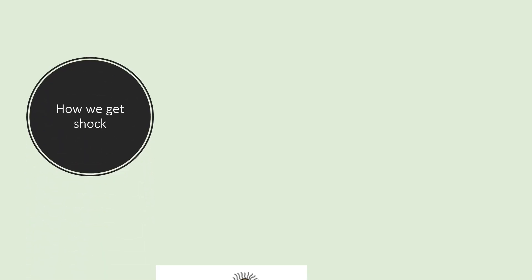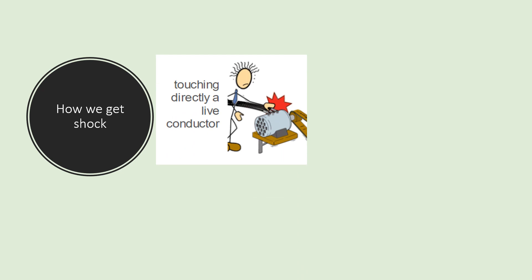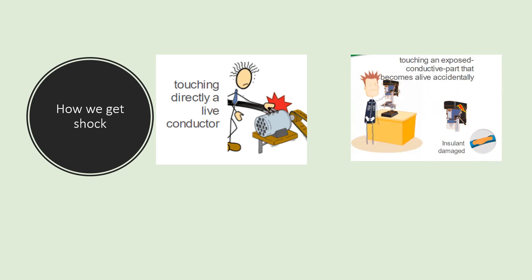Let's see how we can get a shock. There are two reasons. First, if you directly touch a live conductor, you will get a shock — this is called direct shock. The second is indirect shock: you touch a machine whose live parts are connected to its body due to a fault, and due to this you will get a shock.